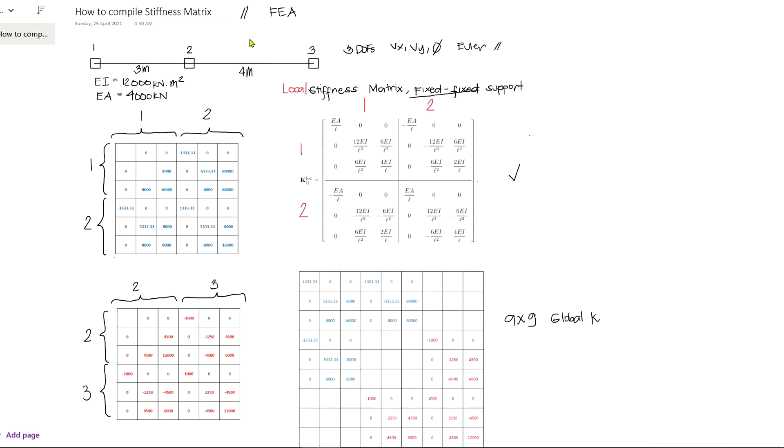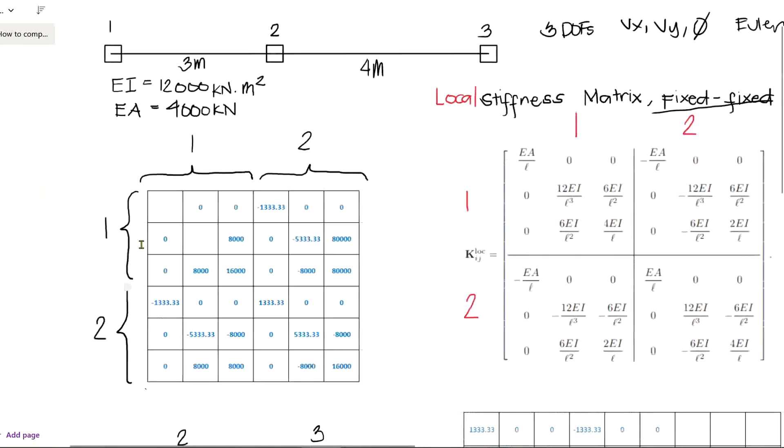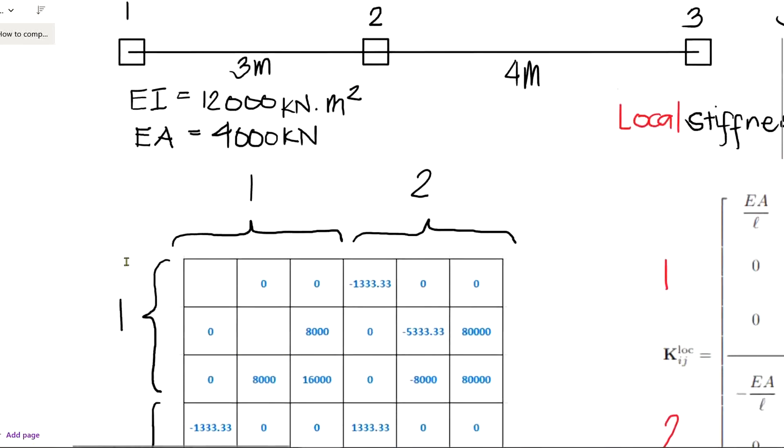Now I intentionally left this blank so I can show you how those values are being calculated. For instance, this is EA over L, or the value of EA is 4000 divided by the length of 3 meters, which gives a value of 1333.33.